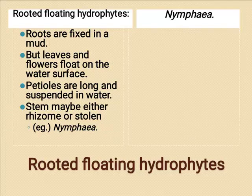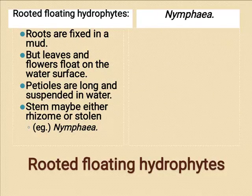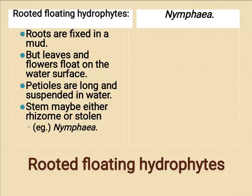Rooted floating hydrophytes are anchored to the muddy soil at the bottom of ponds and lakes. Best examples are water lily, lotus, and Potamogeton. To prevent the leaves from being flooded, the petioles may be very long to adjust easily to changes in water level. In the giant water lily, Victoria regia, the enormous leaves have a vertical rim to prevent them from being flooded.